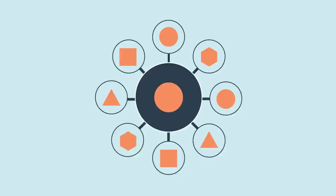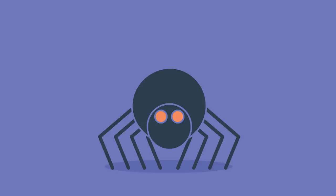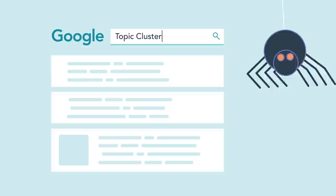It's all about helping web crawlers make connections. Topic Clusters signal to Google that there's a semantic relationship between the content, and more importantly, that you're a trusted authority on the topic, worthy of a top spot.